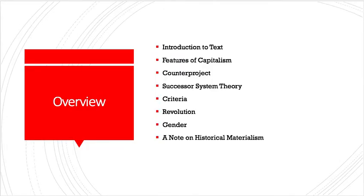To overview the lecture, I'm going to talk a little bit about the text to introduce it, and then we will get into the features of capitalism, the counter project, the successor system theory, the criteria for such a theory, how revolution works today, and then we will talk a little bit about gender and have a note on historical materialism.